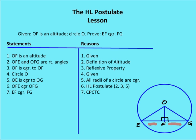Now I can say that OE and OG are congruent. OF congruent to OF is my leg, and the hypotenuse is going to be the radius of the circle, so OE and OG are congruent. I have two right angles because I have an altitude to EG, OF congruent to itself, and the two hypotenuses for each respective triangle are congruent because all radii of a circle are congruent. So I can say triangle OFE is congruent to triangle OFG by the HL postulate, and then EF is congruent to FG by CPCTC.